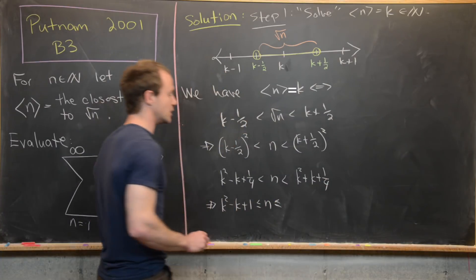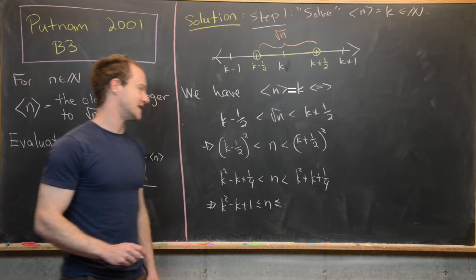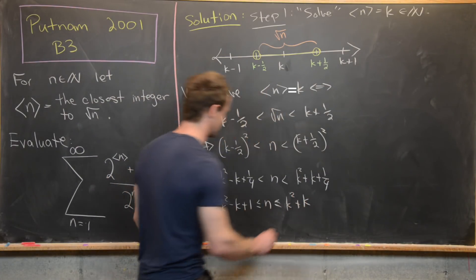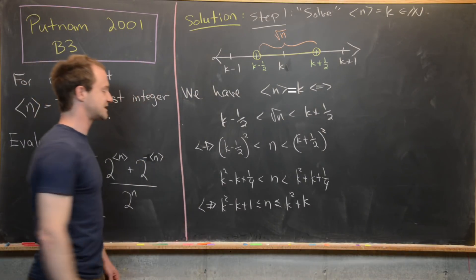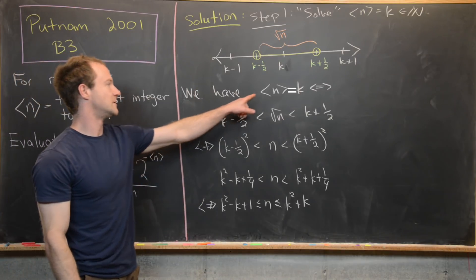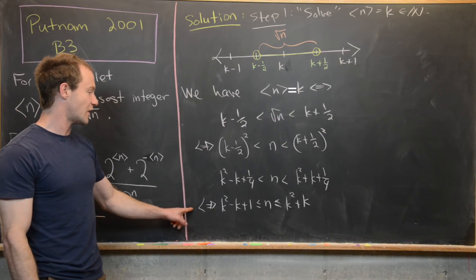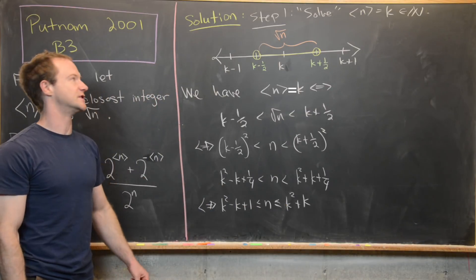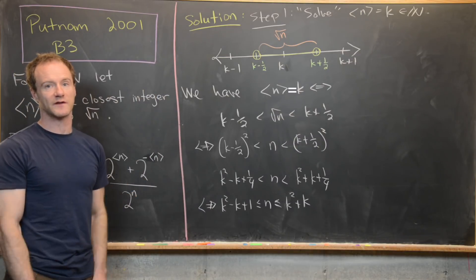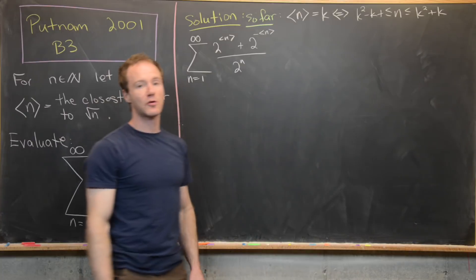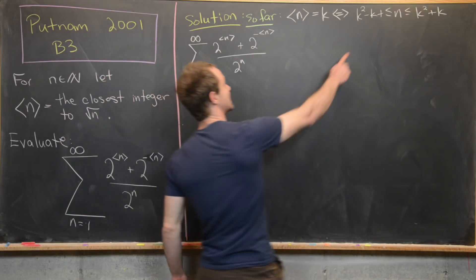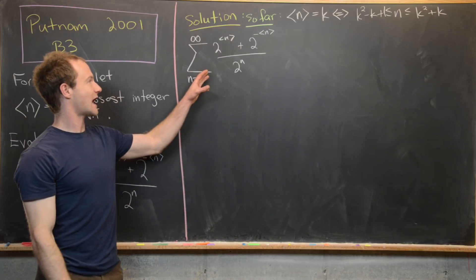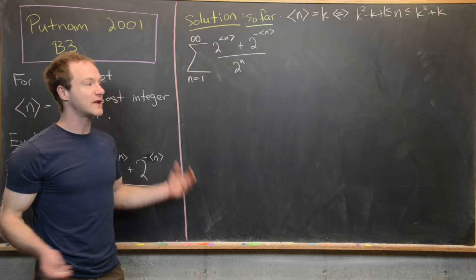Similarly, if n is less than k squared plus k plus one-quarter, then n is less than or equal to k squared plus k. These should all be if-and-only-if statements. So we conclude: angle bracket n equals k if and only if n is between k squared minus k plus 1 and k squared plus k, inclusive.